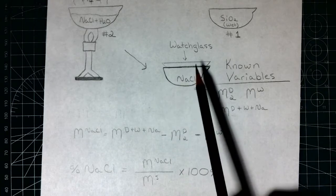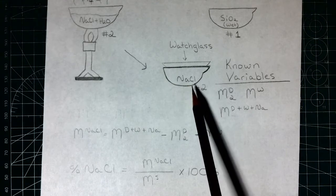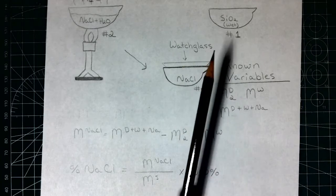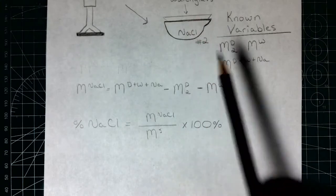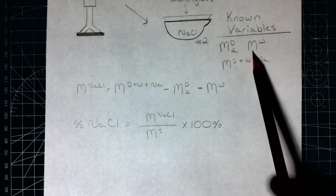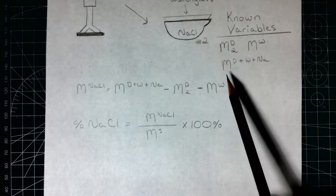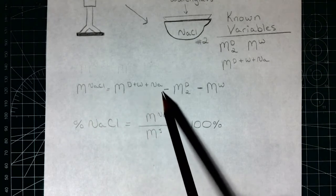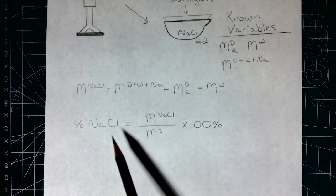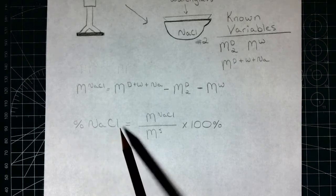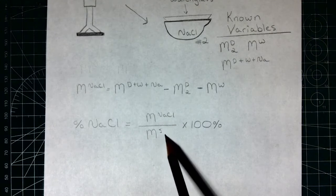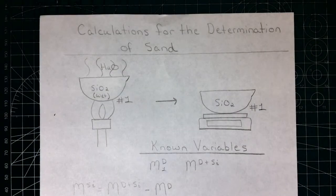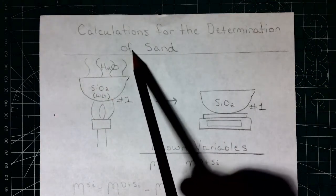We're going to mass this dish with the watch glass and the sodium chloride. To get the mass of the sodium chloride we need to have massed the watch glass before adding it. Our known variables are: the mass of dish two, the mass of the watch glass, and the mass of the dish plus the watch glass plus the salt. The mass of the salt is the mass of all three minus the mass of the dish minus the mass of the watch glass. The percent sodium chloride is the mass of sodium chloride divided by the whole mass of the sample — calculated in the previous section — times 100%.